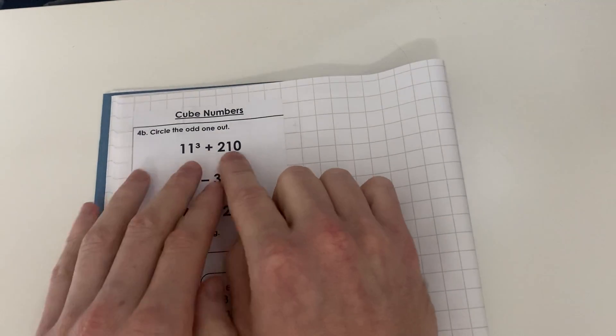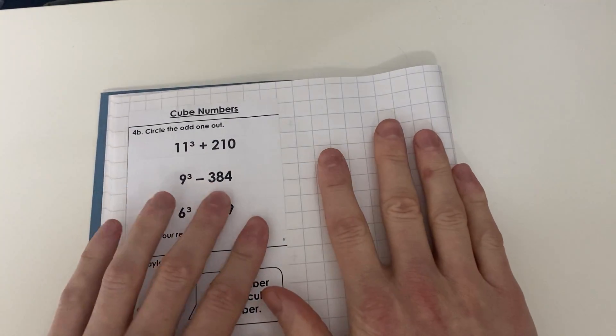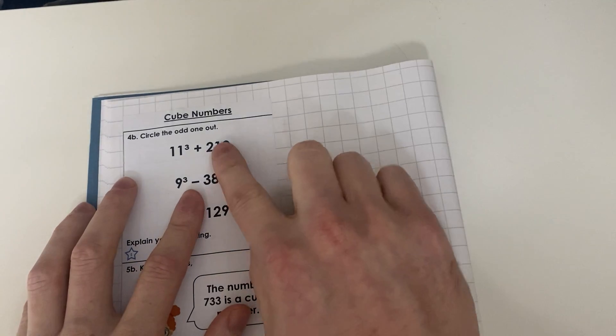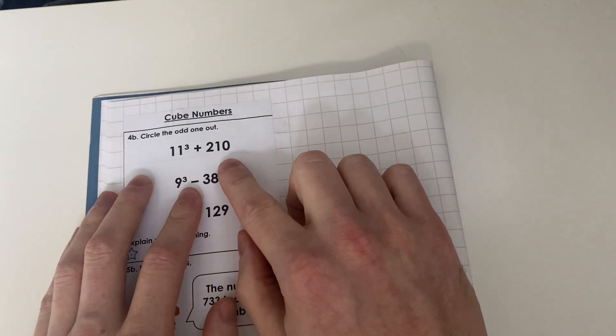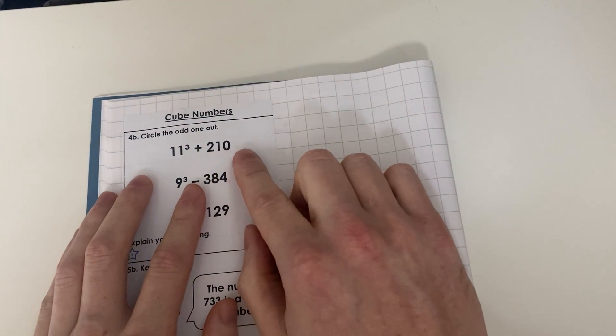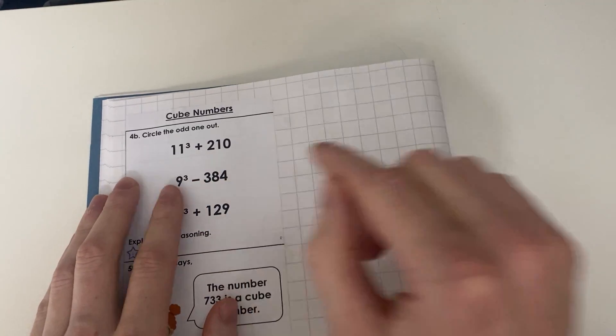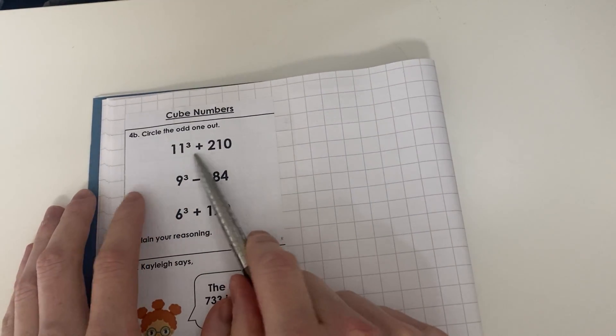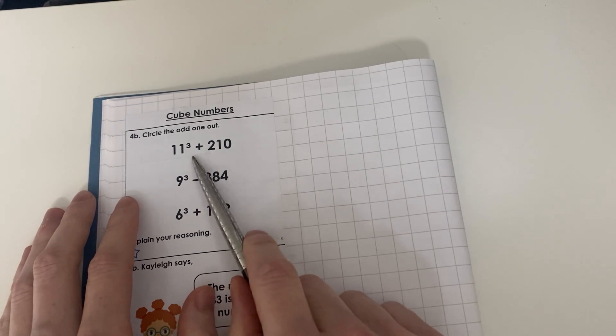Now hopefully you've kept your work from yesterday to identify the answer for every cube number up to 12, so this will help for today's learning. It says here circle the odd one out, so we've got three calculations.